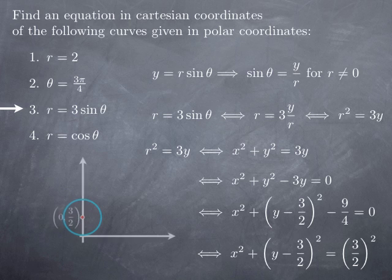This is the Cartesian equation of a circle centered at the point (0, 3/2) and of radius 3/2. It is a circle centered on the y-axis and tangent to the x-axis. This is what we would find in general for a polar curve of the type r = a·sinθ.